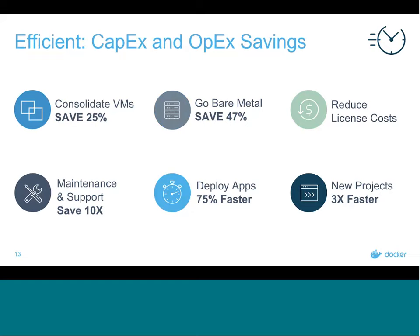Many customers are seeing significant CapEx and OpEx savings, achieving operational efficiency. Real customer stats: one customer consolidated their data centers from 92 to 24, saving 25% on VMs. Cornell achieved 10x savings in man-hours on app maintenance, and cloud disaster recovery went from days to 30 minutes. Most customers are deploying apps about 75% faster and are able to innovate and add features, achieving 10x maintenance and support savings.